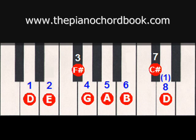Likewise, if we start on the E note, the second scale degree, we can build an E minor chord by going E, moving up to the fourth scale degree, G, and then the sixth scale degree, B. So E, G, B make up the E minor chord.